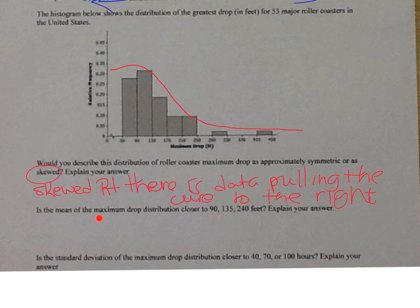So it's skewed to the right because there is data pulling the curve to the right. And then it says, is the mean of the maximum drop distribution 90, 135, or 240? Since it's skewed to the right, it's not the highest point. It's going to be pulled to the right a little bit. So would it be 90 over here? No, that's too small.